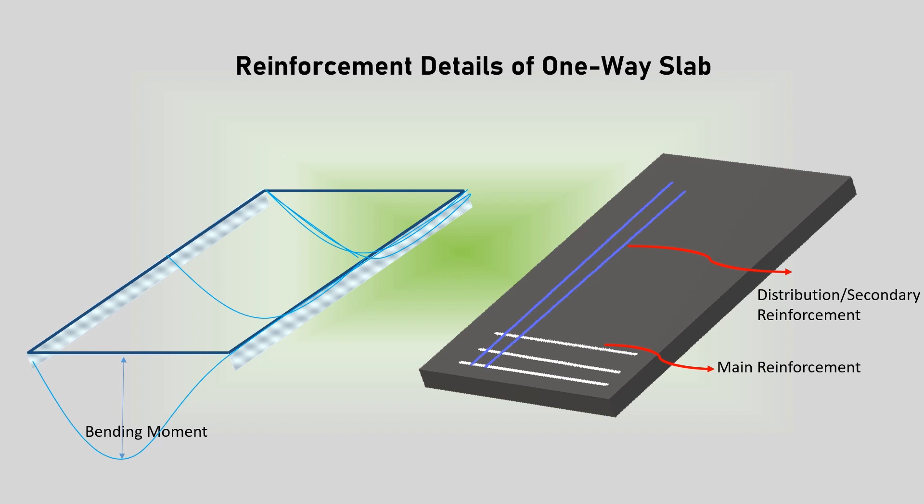For the design of one-way slabs in a slab-beam-girder system, structural reinforcement in the secondary direction is provided to resist bending in that direction, but less than the main reinforcement along the span.